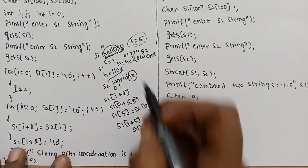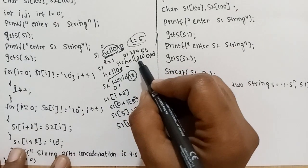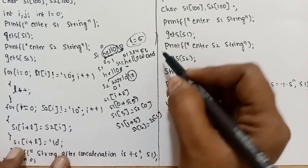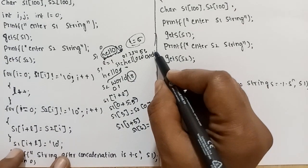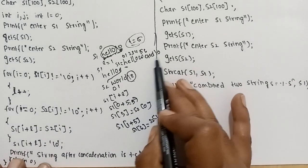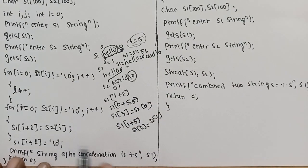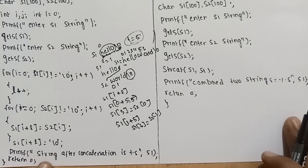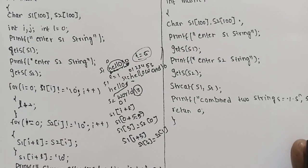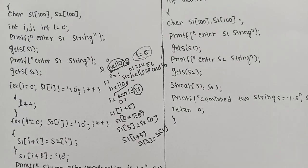In the final step, we place a null character at the position S1[i + L] after all characters of S2 have been copied. This terminates the concatenated string. Without the string handling function, we have successfully concatenated the two strings into S1.